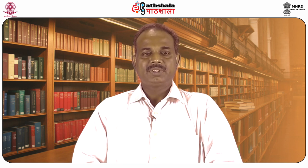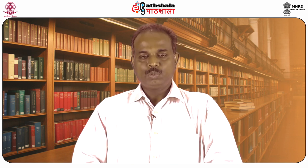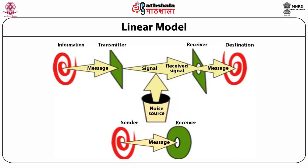There are three types of communication models recognized. The first is the linear model, the second is the interactive model, and the third is the transactional model. The linear model is a one-way process in which the speaker speaks and the listener listens. It consists of the sender encoding a message and channeling it to the receiver in the presence of noise. The drawback is that it assumes a clear-cut beginning and end to communication and displays no feedback from the receiver.